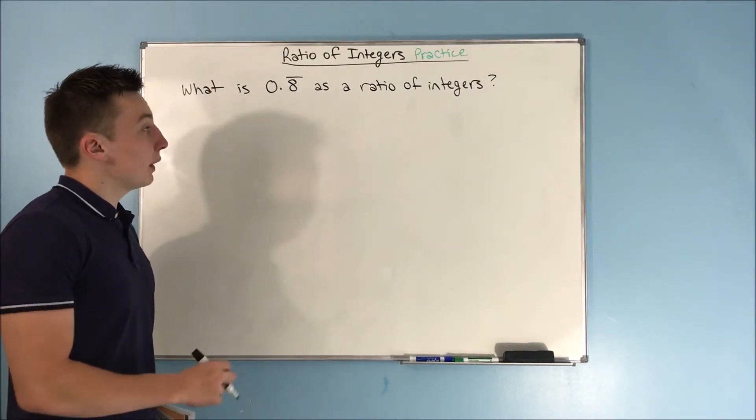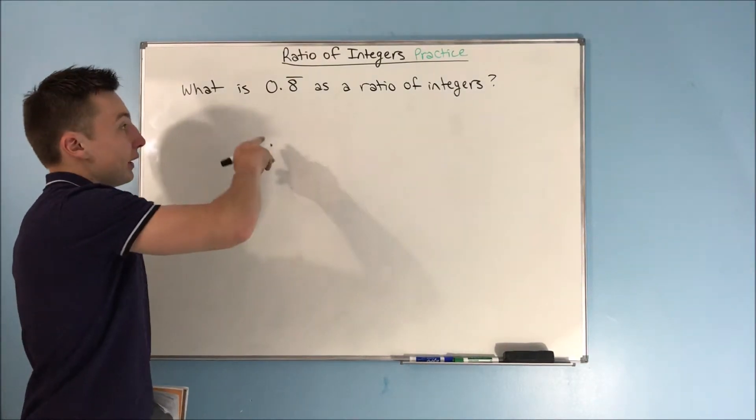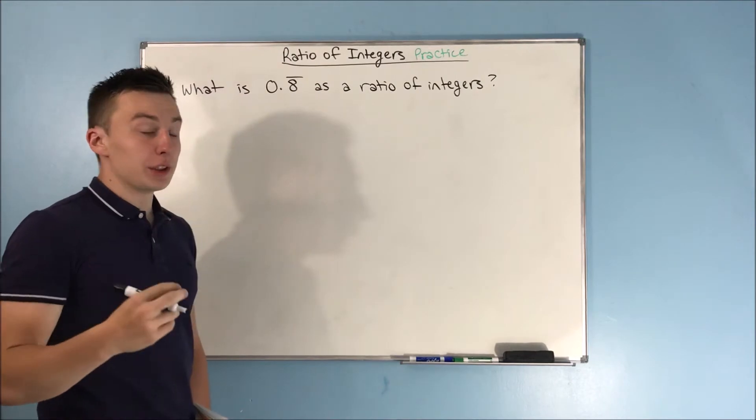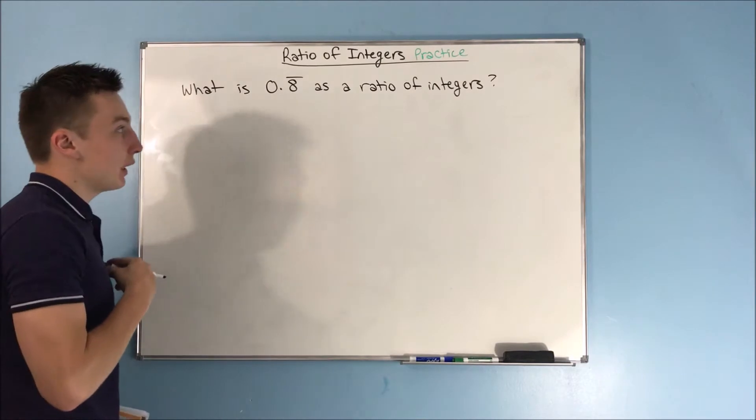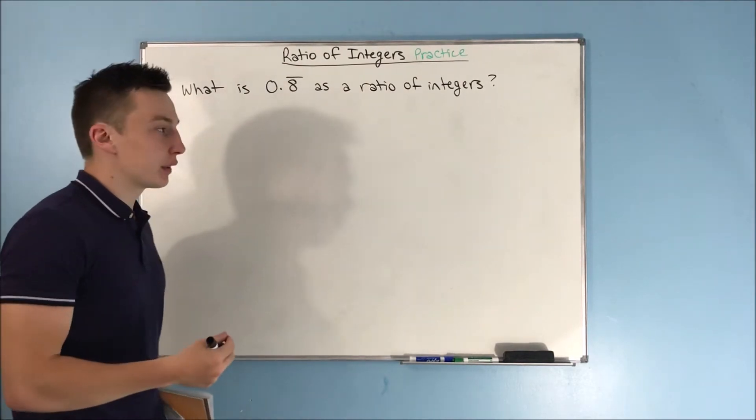Alright, so in this video we're going to be expressing a repeating decimal as a ratio of integers. We are asked the question, what is 0.8 repeating as a ratio of integers?